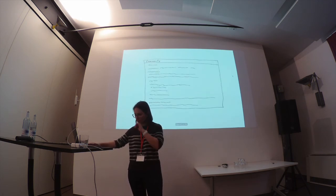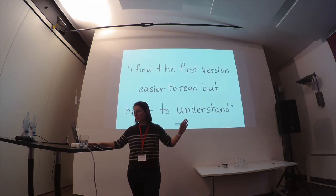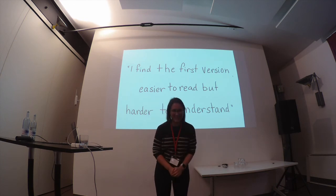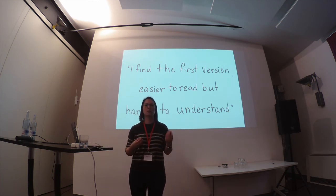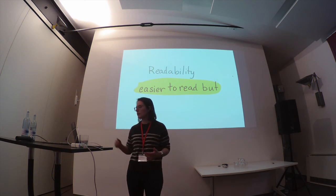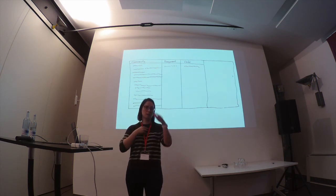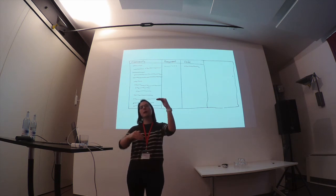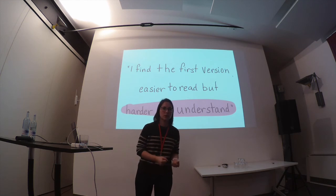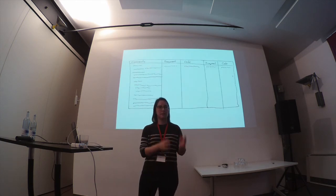Let's see what that looks like step by step. You have this big block of comments — I had 1,000 of them, which I thought I would be able to handle, but I ended up cutting it down to 100. You get stuff like: 'I find the first version easier to read but harder to understand.' That's qualitative information about the feature. So — 'easier to read' — that's about readability. We take that fragment and give it its code: readability. Then this statement had more than one code — 'harder to understand' — I categorize that as heavy cognitive load and as a negative thing.